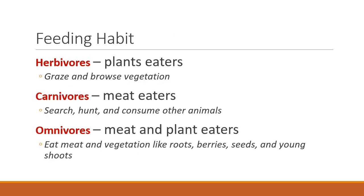Next, let's think about categorizing animals based on what they eat. Herbivores eat plants — grazers and browsers. Carnivores eat meat; they search, hunt, and consume animals. And then omnivores are like us — we are meat eaters and plant eaters.